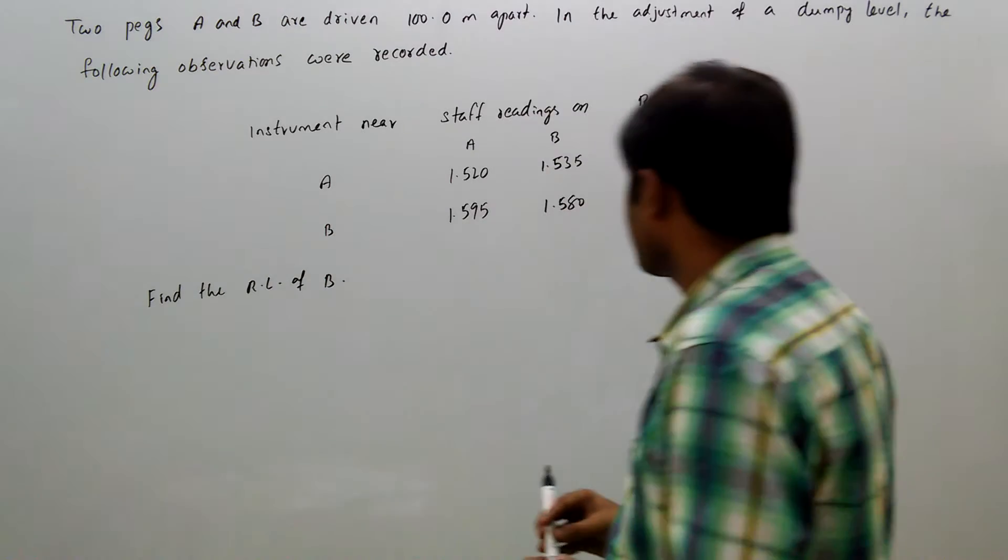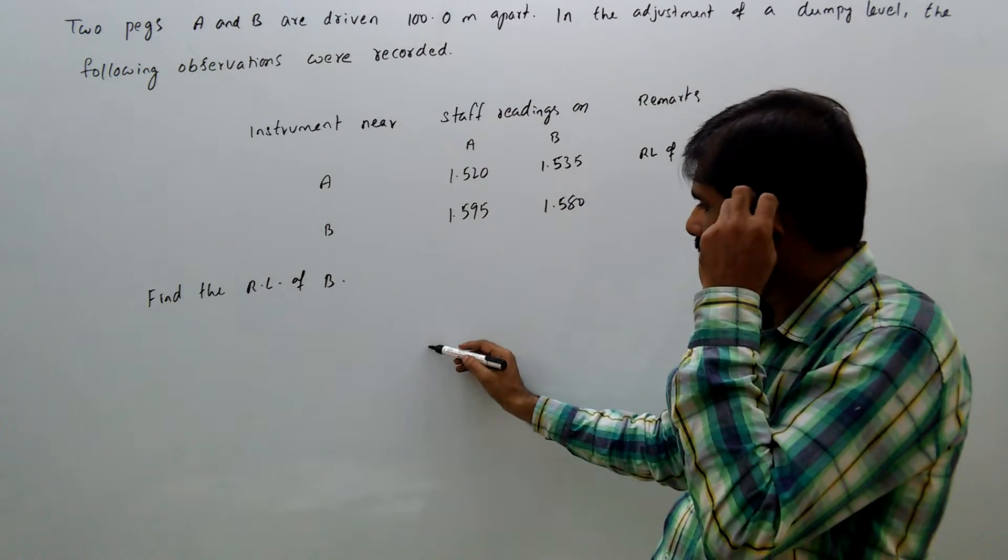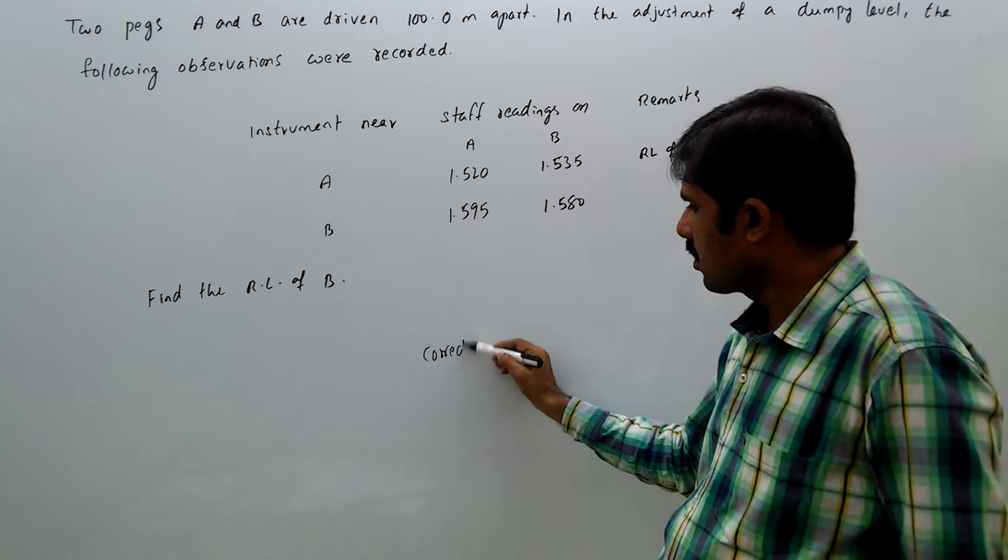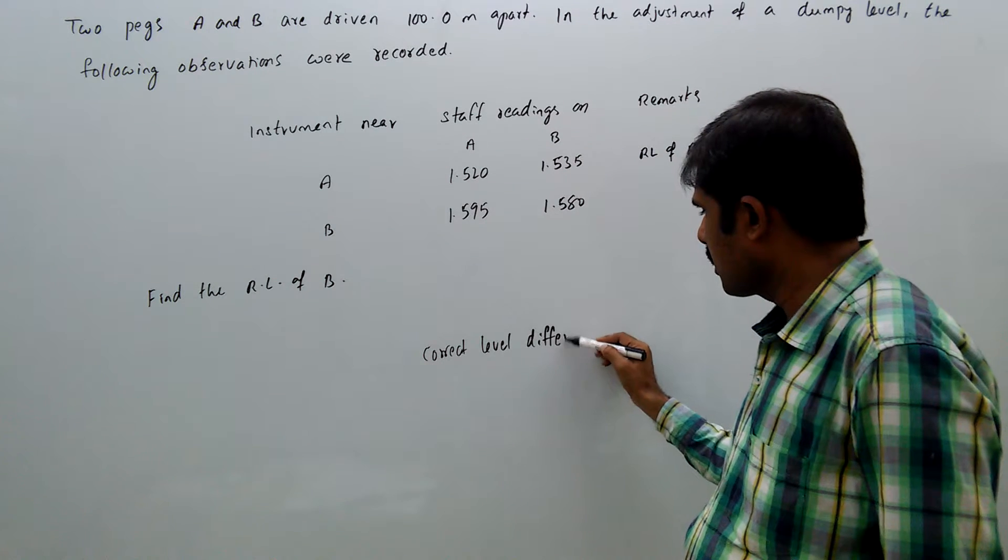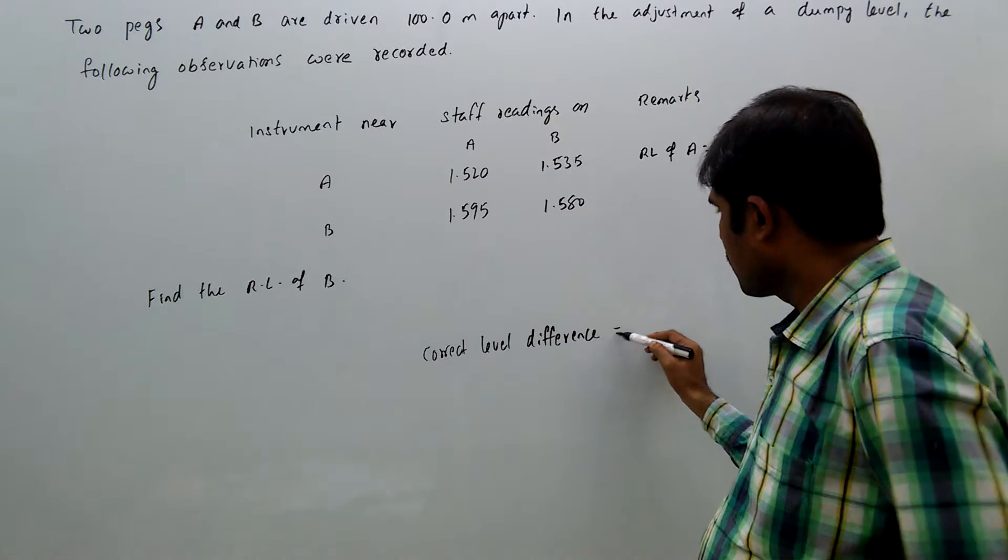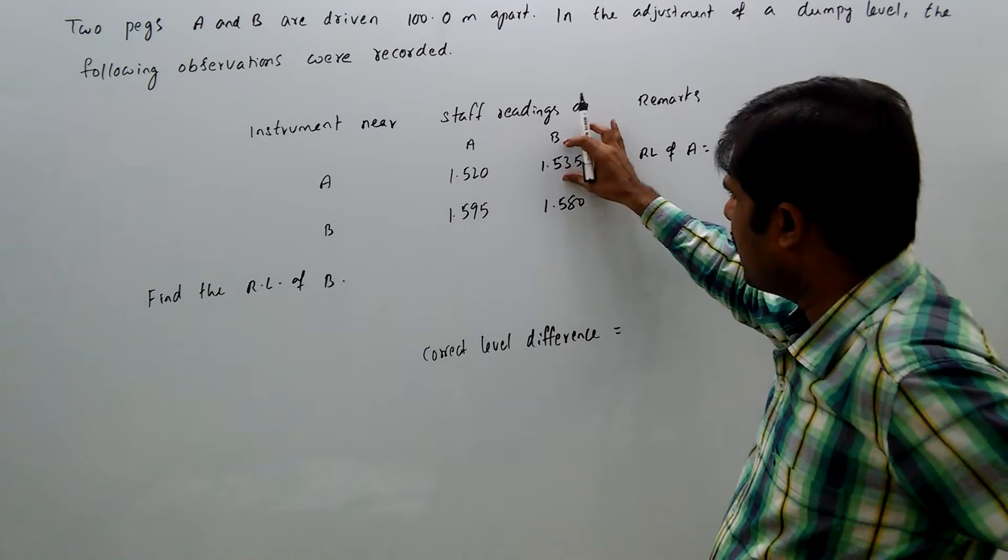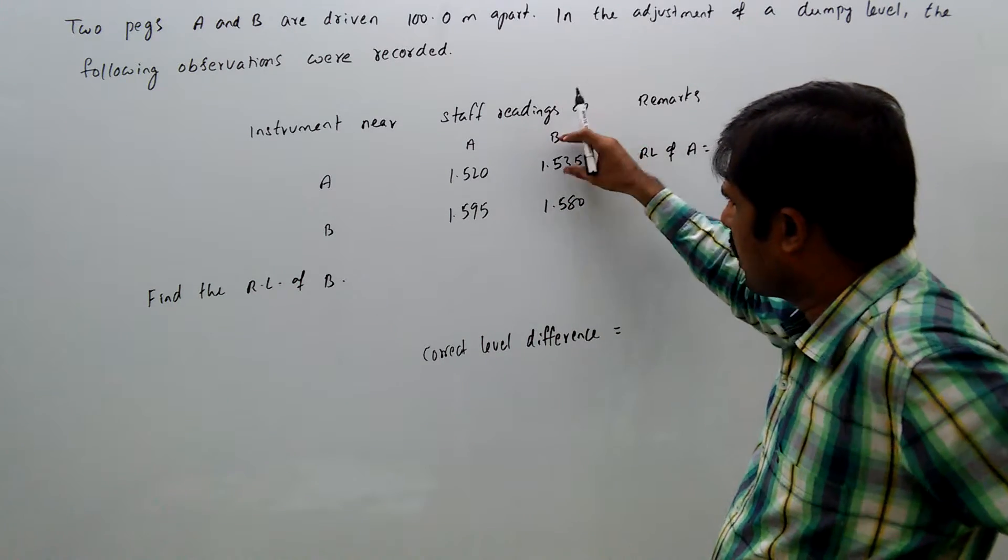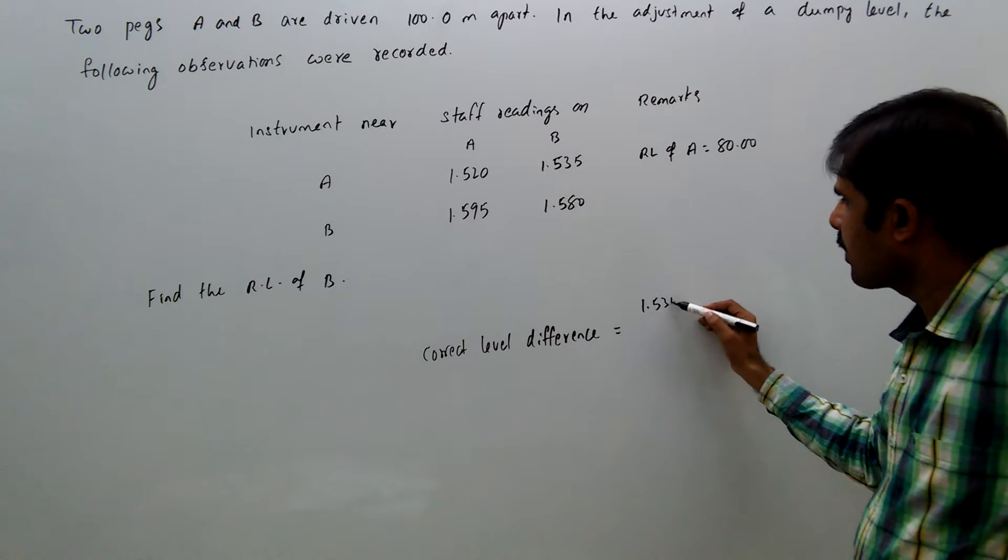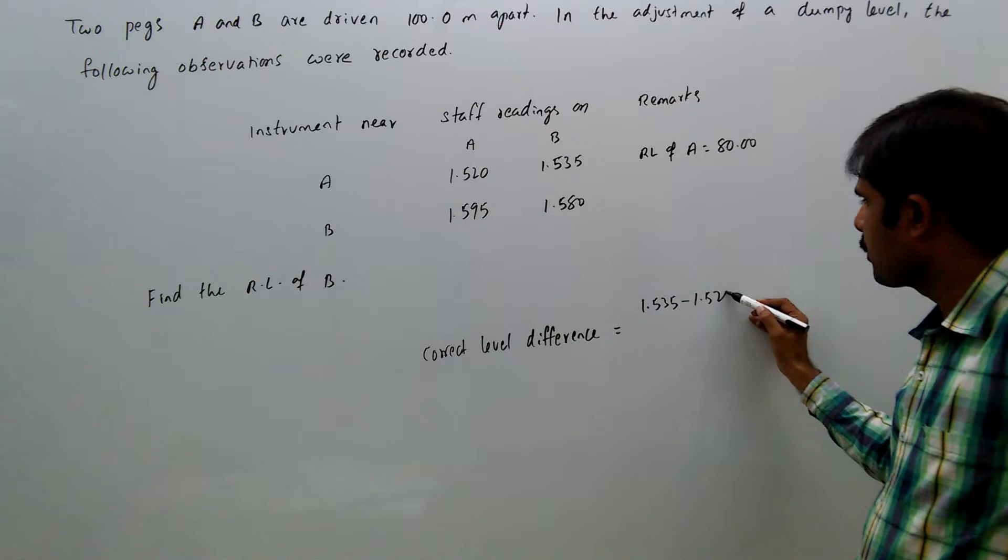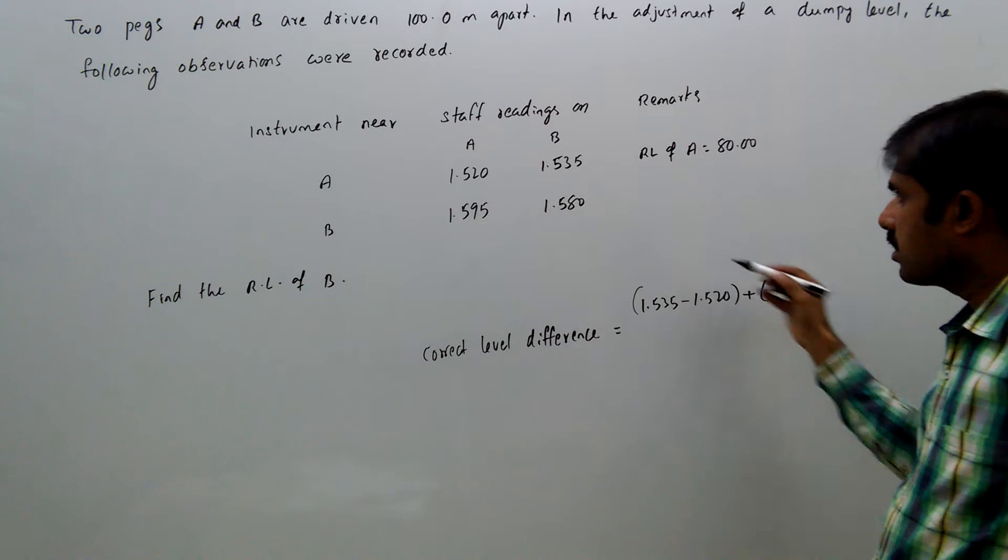Here correct level difference equal to, assume B is at lower level: 1.535 minus 1.520 plus 1.580 minus 1.595 by 2.